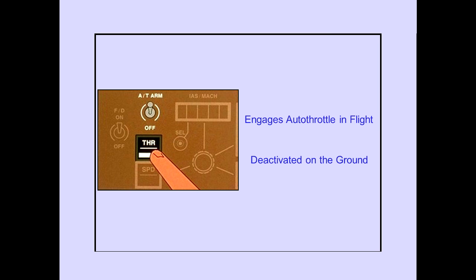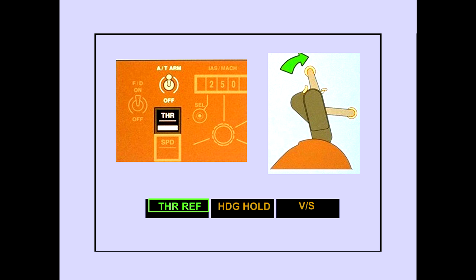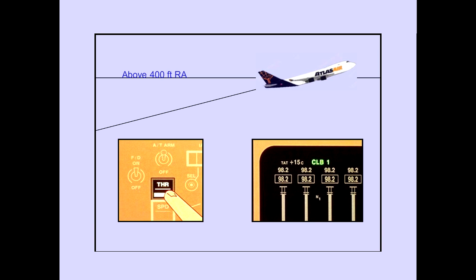The thrust switch can also be used to engage the autothrottle in flight. The thrust switch is deactivated on the ground. When the thrust switch is pushed during flight, the thrust levers advance to the selected climb thrust limit, and thrust reference is displayed on the PFD. Above 400 feet radio altitude, pushing the thrust switch changes the thrust limit to the selected climb thrust limit. Below 400 feet, the thrust switch is disabled.